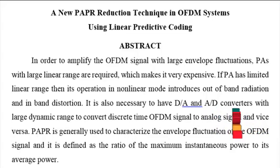It is also necessary to have D to A and A to D converters with large dynamic range to convert discrete time OFDM signal to analog signal and vice versa. PAPR is generally used to characterize the envelope fluctuation of the OFDM signal and it is defined as the ratio of the maximum instantaneous power to its average power.